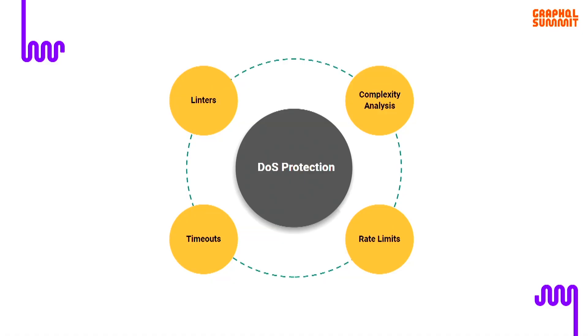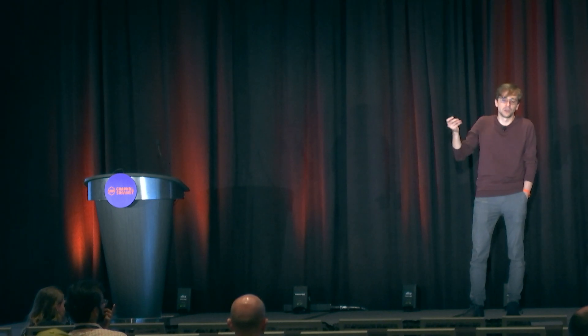Denial of service is kind of complicated. Most of the attacks we see in the news are low-level attacks — TCP level, UDP level, or traffic amplification, maybe HTTP level. GraphQL denial of service is usually at OSI layer seven — application level, pretty high. The issue is that if you find a denial of service vulnerability in a GraphQL service, generally that will allow you to take down the system with just a mobile phone — you don't need that many requests. That's the biggest difference.